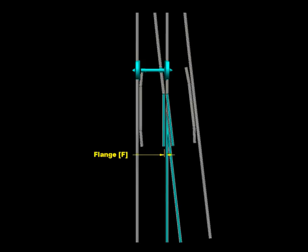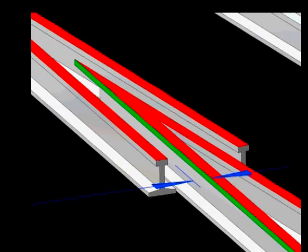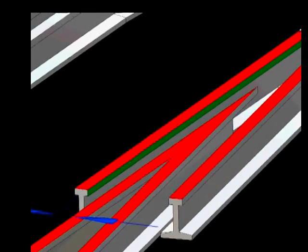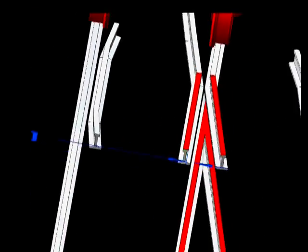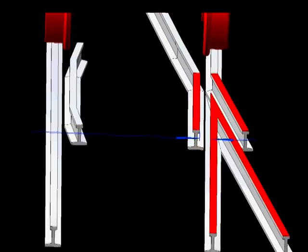Next in line is our frog flange way width. That's the distance between the frog point rail shown in green here and our wing rail shown in green here. That's the distance between those two rail heads and that's our frog flange way.